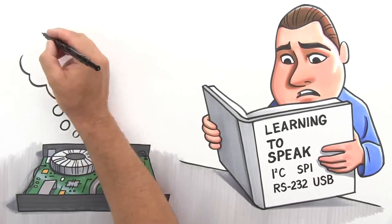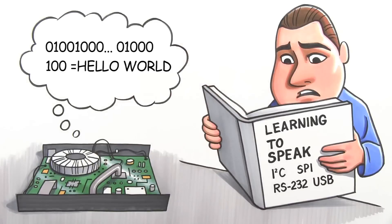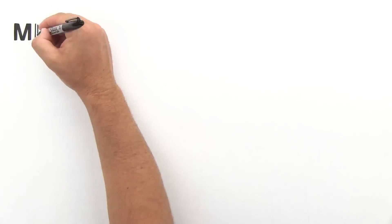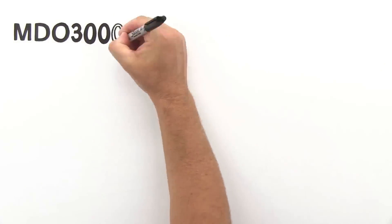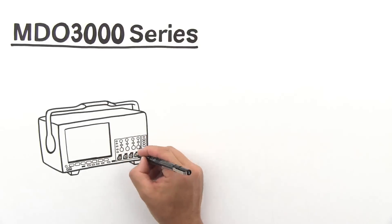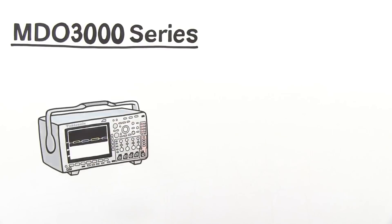Wouldn't you like to have a translator built into your scope so you can hear what's being said and see if your design is doing what it's told? Well, now you can. The MDO 3000 Series Mixed Domain Oscilloscope offers built-in tools for translating your serial bus traffic into a form you can understand.